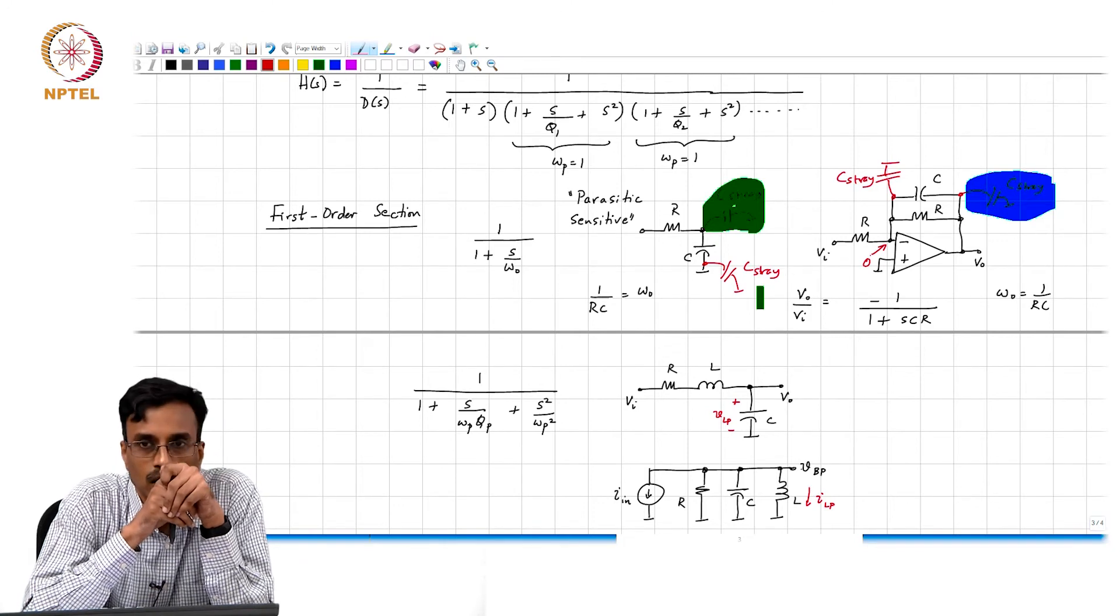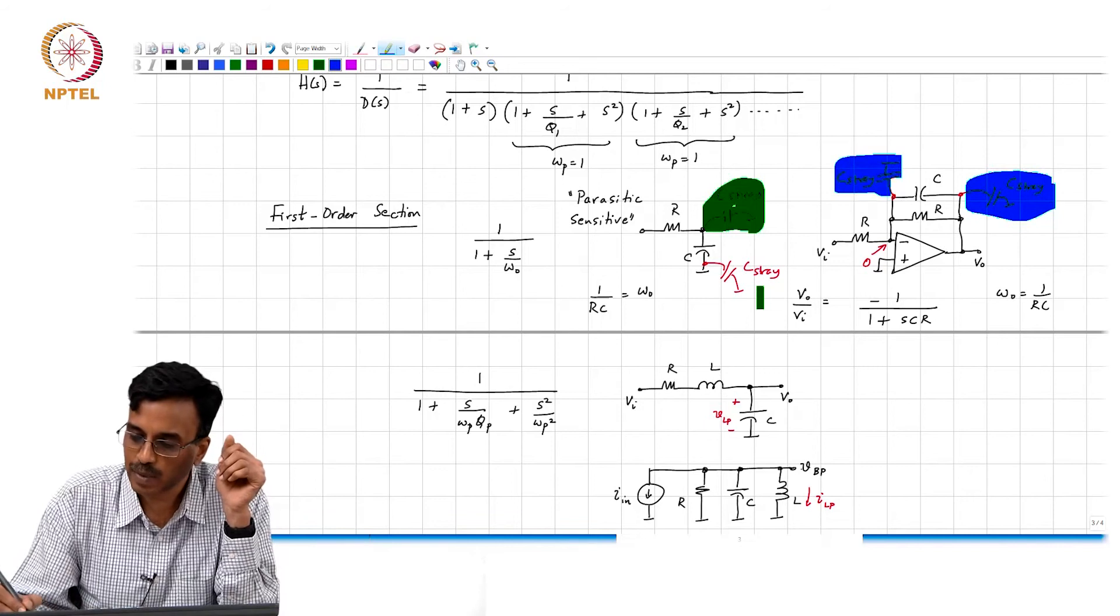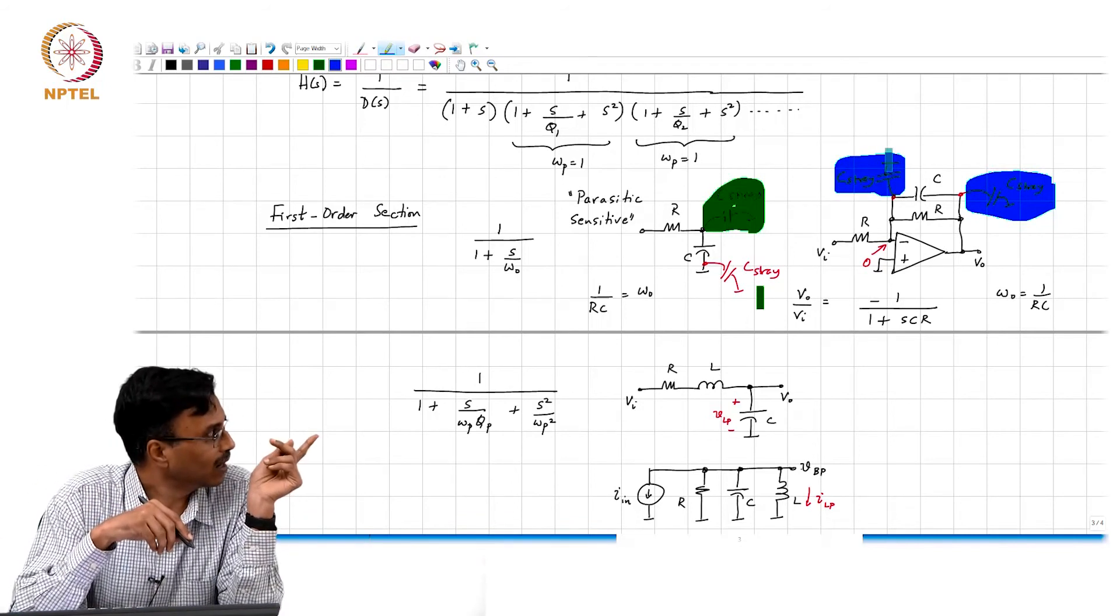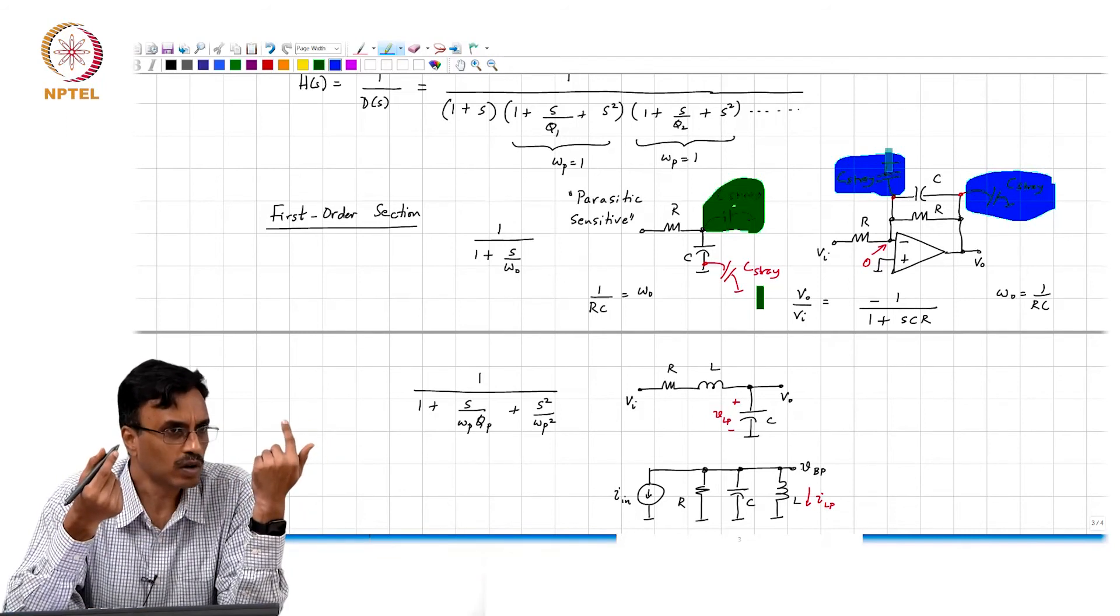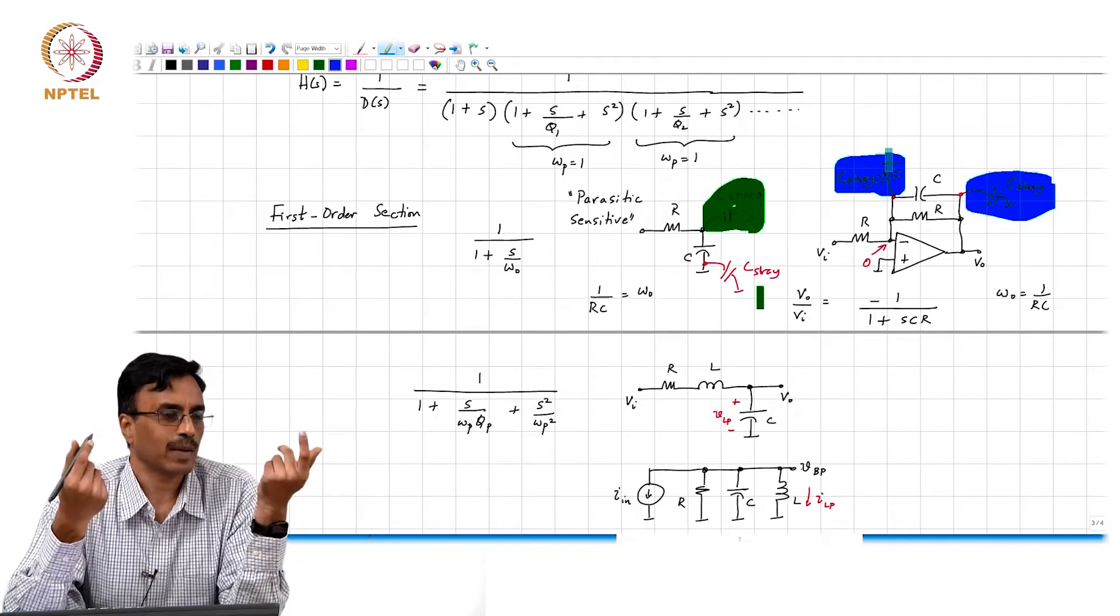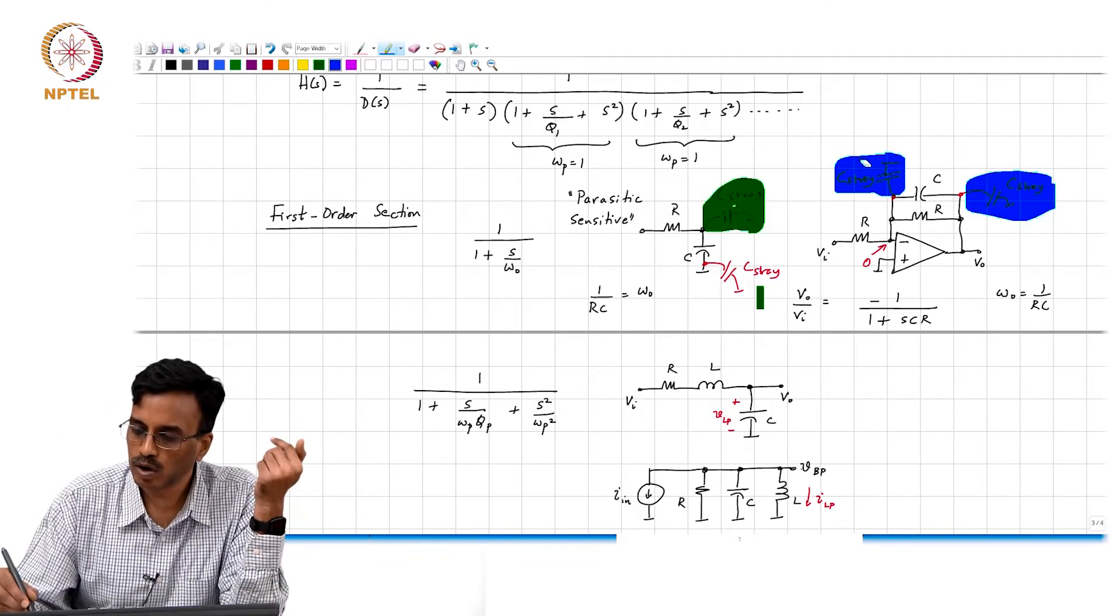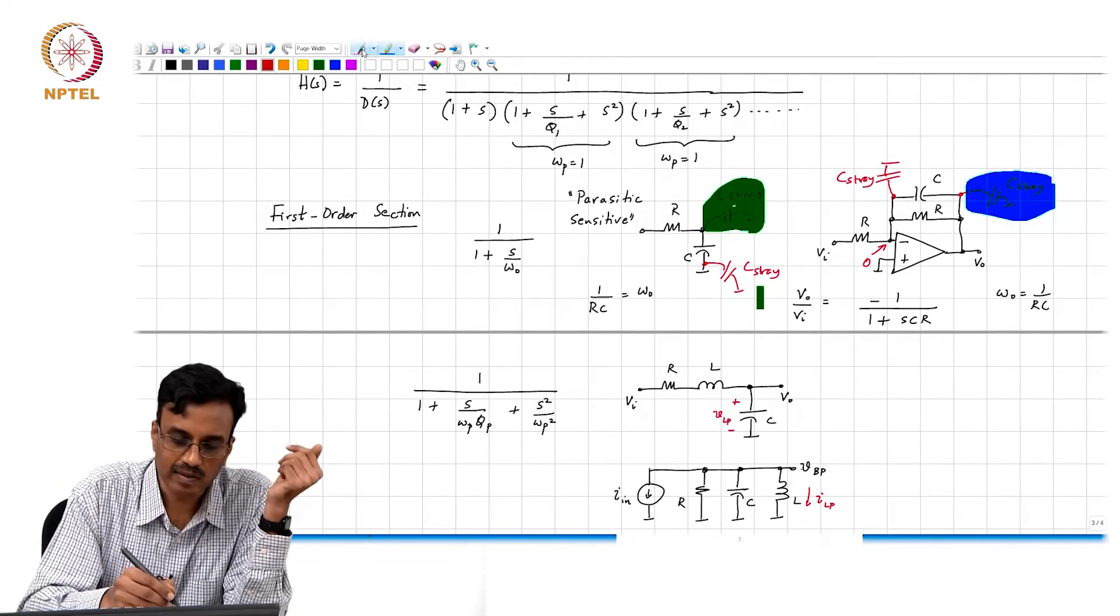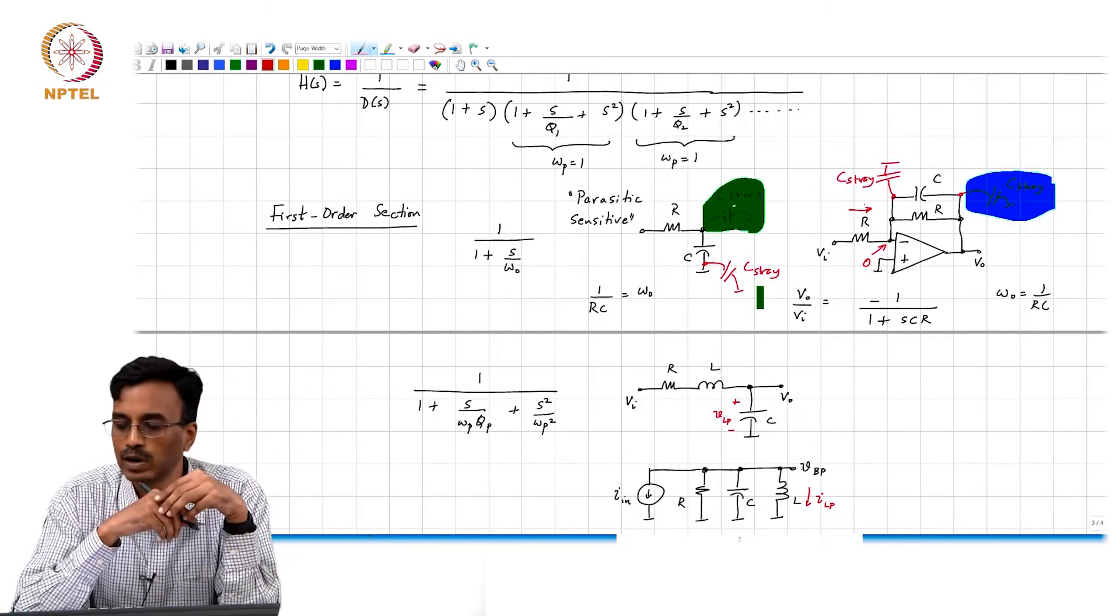It would not. Why? This stray does not matter because one terminal is at real ground, the other terminal is at virtual ground anyway, the potential is 0. The potential difference across the capacitor is 0, so no current will flow through the capacitor. So this stray is of no consequence at all. We need not worry about it.